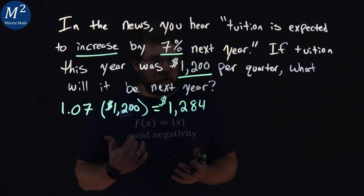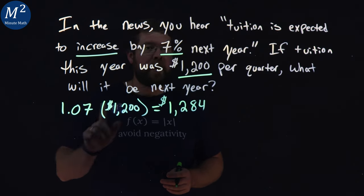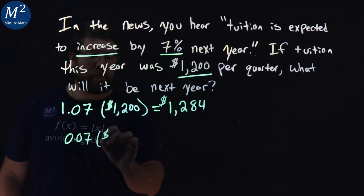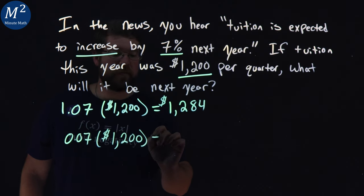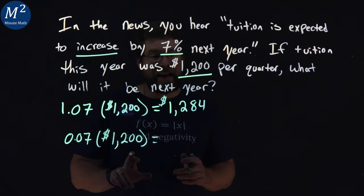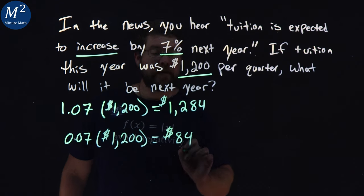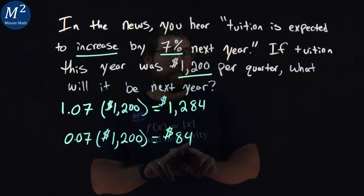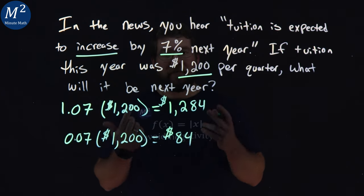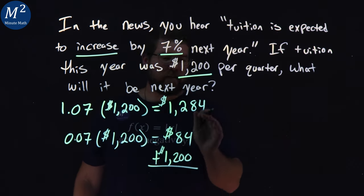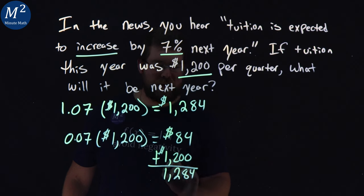Let's break this down the other way, without adding that 1. For a 7% increase, we take 0.07 and multiply it by 1,200. That shows how much more the tuition will cost next year. Multiplying that out gives us $84. Since this is an increase from the previous year, we add last year's price: $1,200 plus $84, which gives us the same value of $1,284.